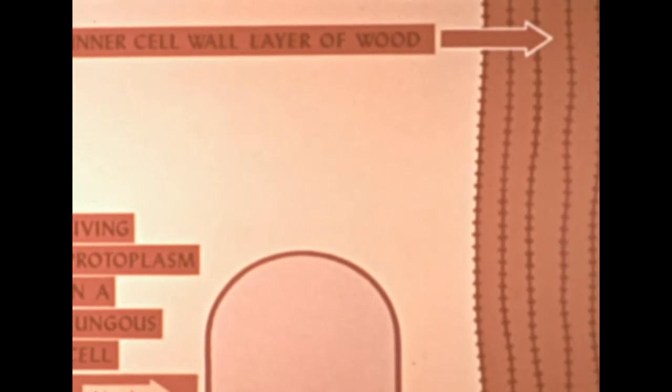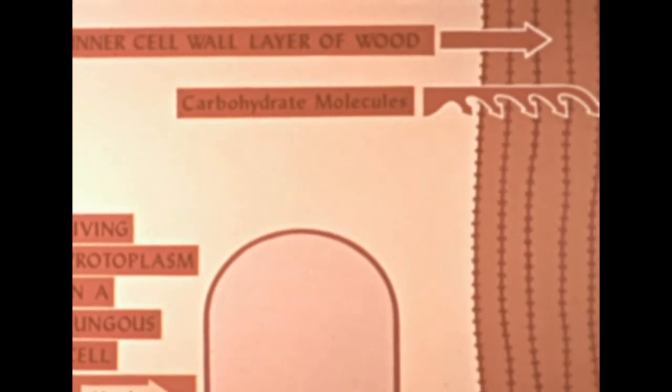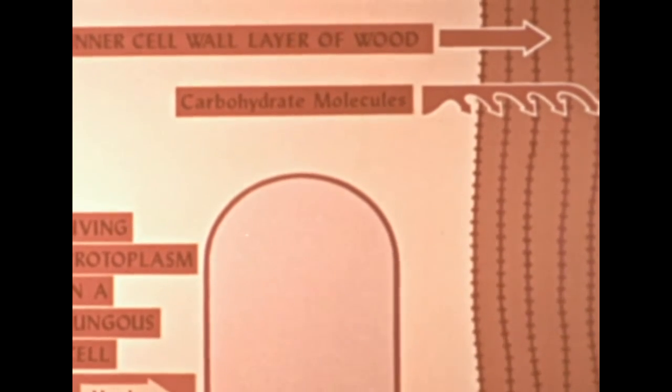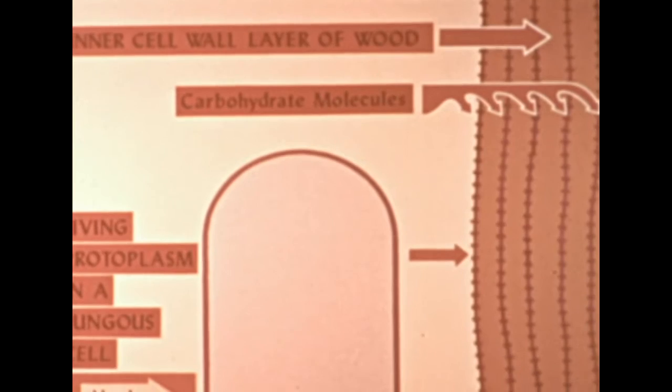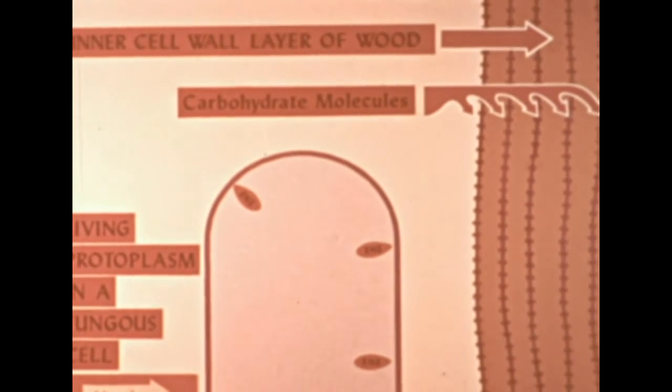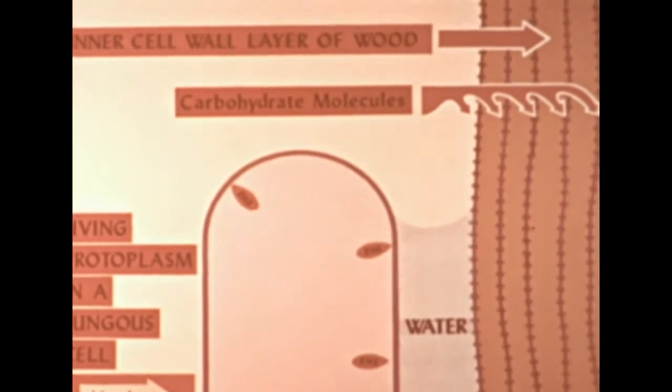Now let us enter the much smaller molecular realm where the chemical processes of decay take place. The framework of wood cell walls consists of long chain molecules of carbohydrates, principally cellulose. The hyphae of a wood-destroying fungus is part of a dynamic living organism. It must have energy producing food to live and grow. The simple sugar units of the carbohydrate wall can provide this energy. But the enzymes produced by the hypha attack the wood structure only if there is a film of water through which they can diffuse. Unless wood is wet, the enzymes have no way of reaching this potential food for the fungus.